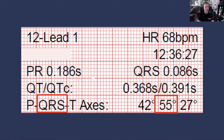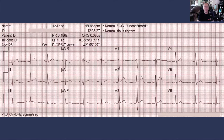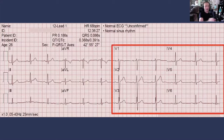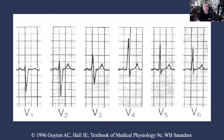The heart is a three-dimensional object, and we've only talked about the axis in the frontal plane. What about the horizontal plane? Instead of calculating that axis, here's what I teach: we look at the precordial leads — the leads physically placed on the patient's chest. In a normal ECG, the QRS complex should start out negative in lead V1 and end up positive in lead V6. Somewhere in between, there should be a transition from negative to positive.